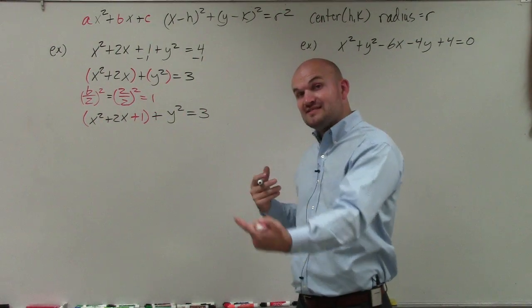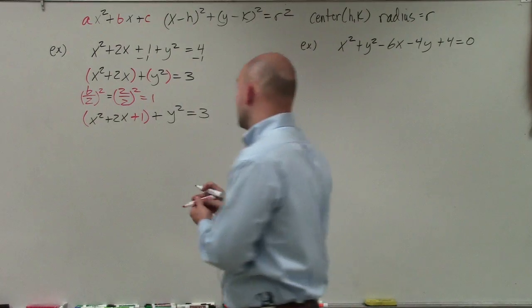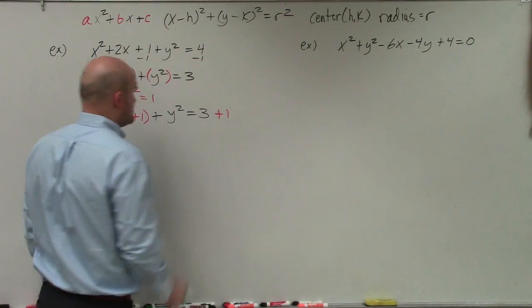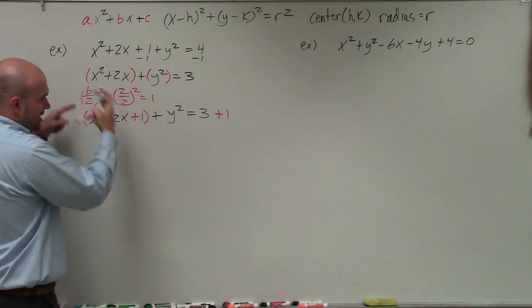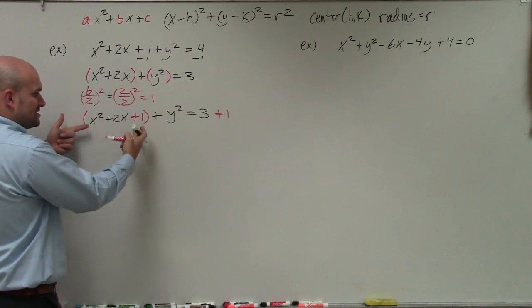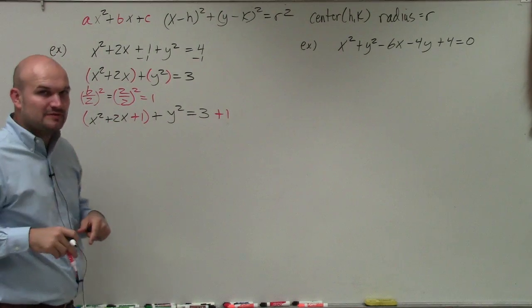Since I added a 1 to the left side of the equation, I have to make sure I add a 1 to the right side of the equation. Now I have created a perfect square trinomial. By completing the square, by finding the value c that completes the square, I now have created a perfect square trinomial.